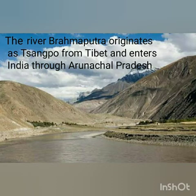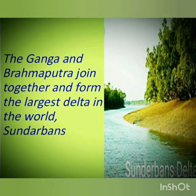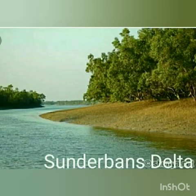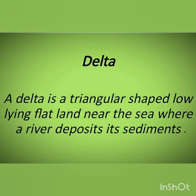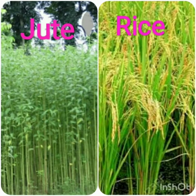The Brahmaputra originates in Tibet as the Tsangpo and enters India through Arunachal Pradesh. It is the longest of the three Himalayan rivers. The Ganga and Brahmaputra join together and form the largest delta in the world, called the Sundarbans. A delta is a triangular-shaped low-lying flatland near the sea where a river deposits its sediments. The major crops grown here are jute and rice.